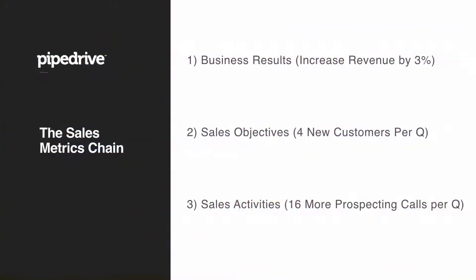Here's an example. My goal is to increase revenue by 3%. To do that, I need four new customers per quarter. And to get those four new customers, I have to do 16 more prospecting calls a quarter. As a sales manager or VP of sales, when your CEO says increase revenue by 3%, you have to ask: what do I need to do from a sales objective standpoint? Then take it one step further — you can't just tell your sales team to go get four new customers. You have to tell them the specific sales activities needed to achieve that, in order to hit the 3% revenue growth.